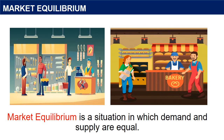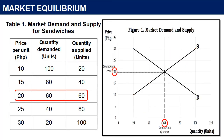Market equilibrium is a situation in a market that happens when the price balances the amount that consumers want to buy and the amount that sellers want to sell. Figure 1 shows the combined demand curve and the supply curve for sandwiches. The price at which the quantity demanded equals the quantity supplied is called the equilibrium price — the price agreed by consumers and sellers, which in the graph is at 20 pesos. The equilibrium quantity is 60 sandwiches.